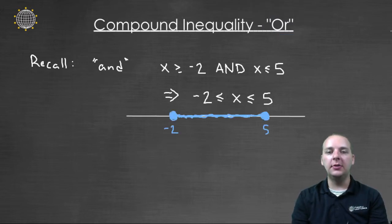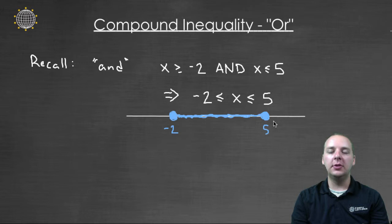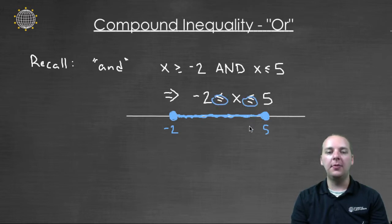We can graph these on a number line — the x's past negative two but before five. We have closed dots on each of the endpoints because these are less than or equal to type inequalities. And this will be your final answer.